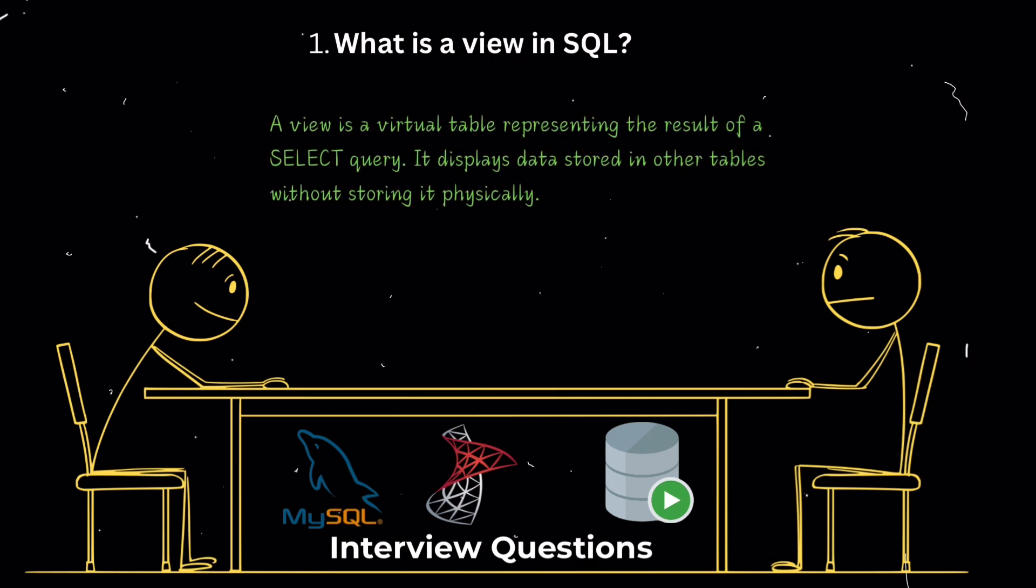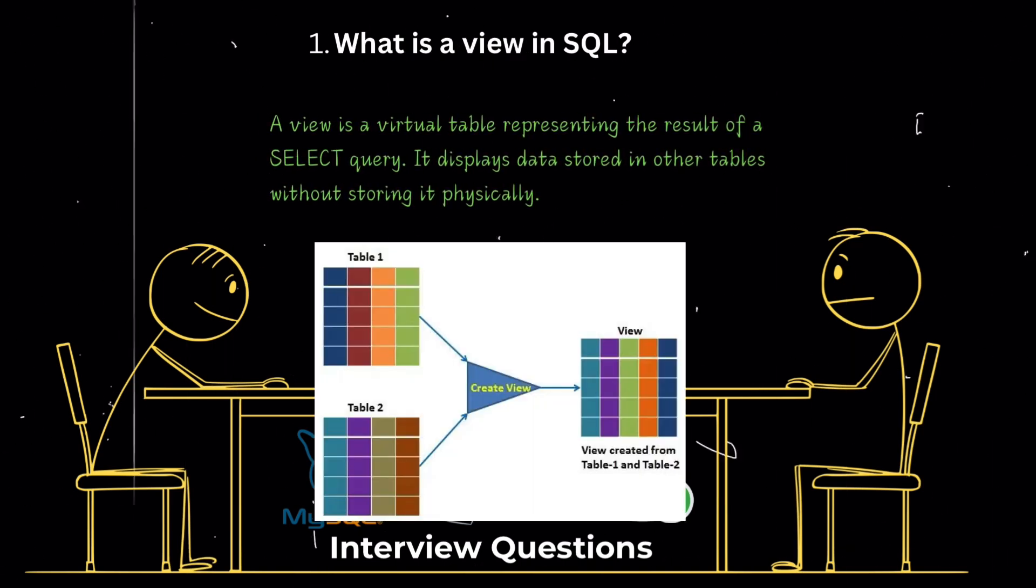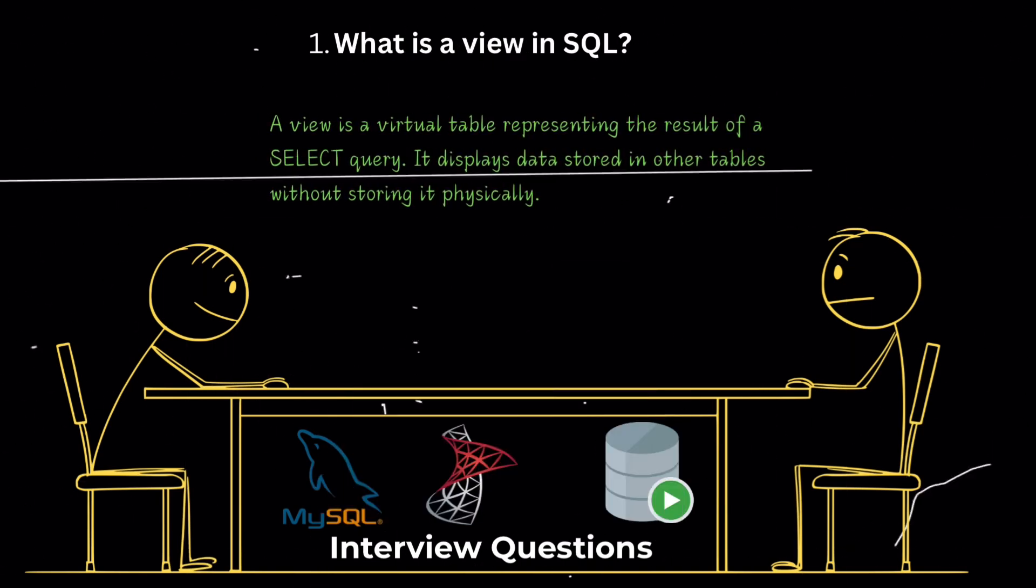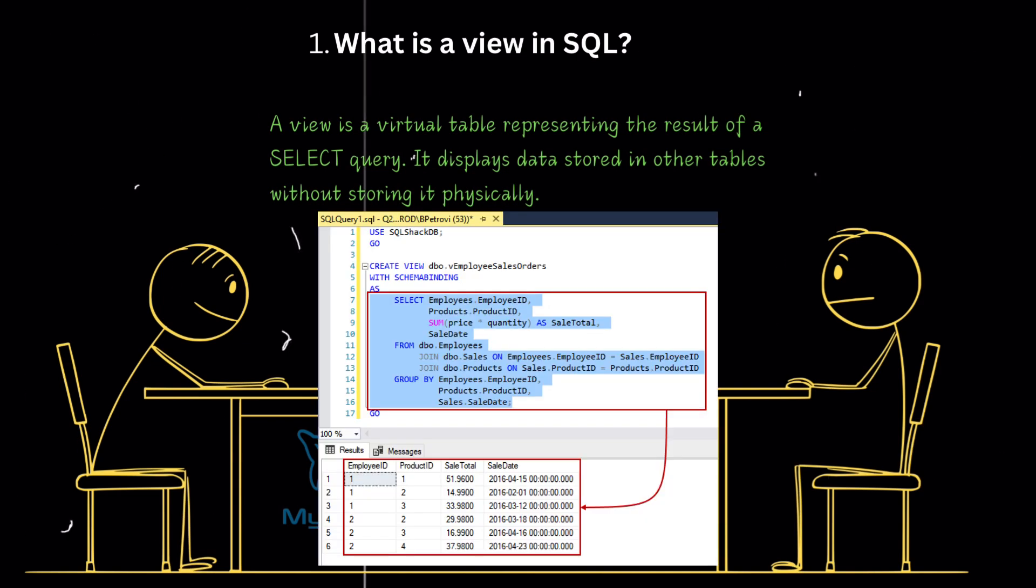What is a view in SQL? A view in SQL is a virtual table that represents the result of a select query. Views have rows and columns just like real tables but do not store data physically. Instead, they display data stored in other tables. You can create a view by selecting specific fields from one or more tables.